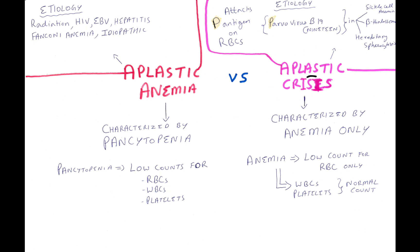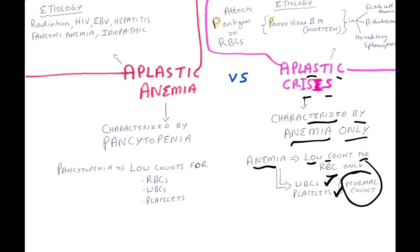Aplastic crisis is characterized by anemia only. What is anemia? Anemia is low blood counts for RBCs only. Here, WBCs and platelets count are normal.